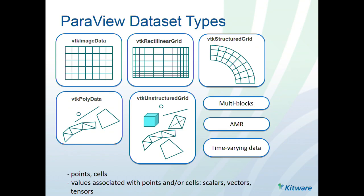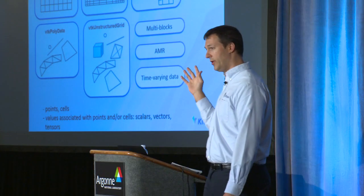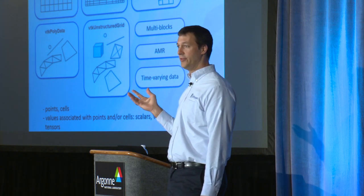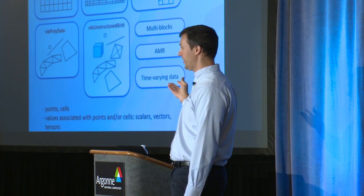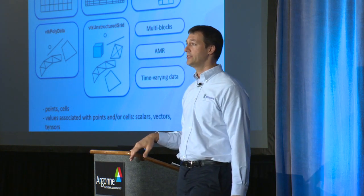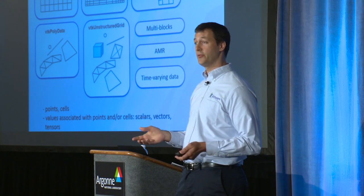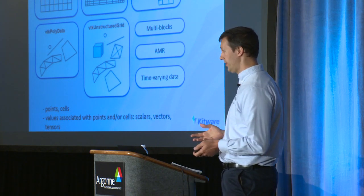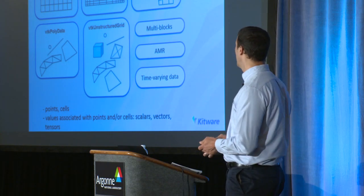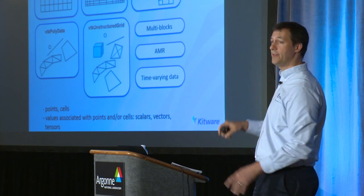ParaView data set types are essentially the same as what Cyrus showed, since both are based on VTK. We have different data set types because we need to handle them all efficiently. Storing a Cartesian grid — VTK image data — as an unstructured grid would waste a lot of memory on topology we already know implicitly. VTK has different grid types so you have a very efficient representation based on your situation.